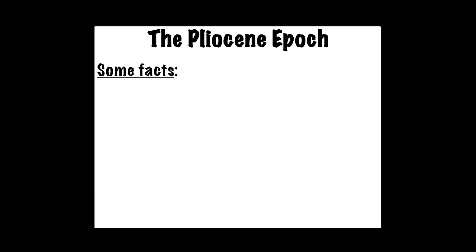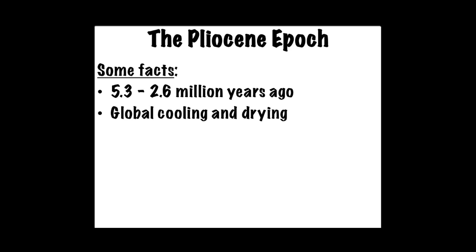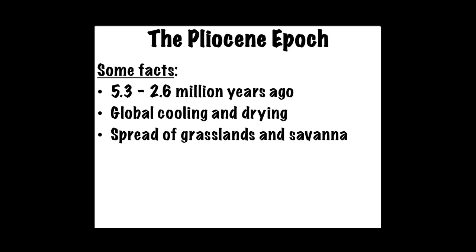First, the Pliocene epoch. It's a geological epoch that went from about 5.3 million years ago to about 2.6 million years ago. This was about the time when there was global cooling and drying compared to the earlier Miocene, which goes from about 23 million years to about 5.3 million years. There was also a spread of grasslands and savannah.